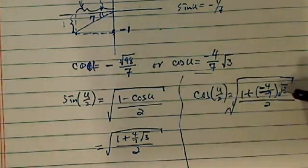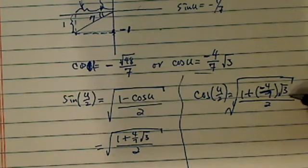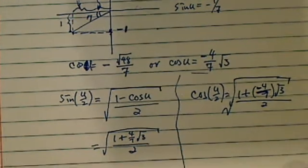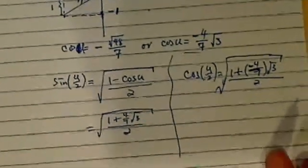Since 4 radical 3 over 7 is less than 1 (radical 3 is about 1.732), we're safe here. Having found sine and cosine,